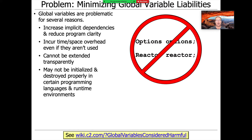So why don't we just make global variables? Why don't we have an options global and a reactor global and just be done with it? Well, there are a number of problems with globals. First and foremost, they increase implicit dependencies in your code — dependencies that are not really obvious from looking at the APIs; they just appear globally. They can also incur time and space overhead even if they're not used, they can't be extended transparently, and they may not be initialized and destroyed properly in certain languages and runtime environments, and C++ is clearly one of those.